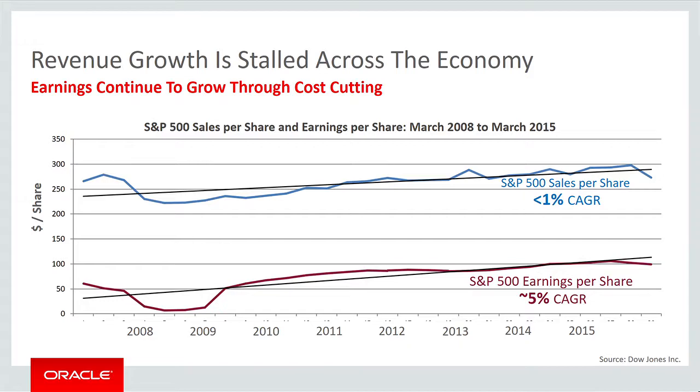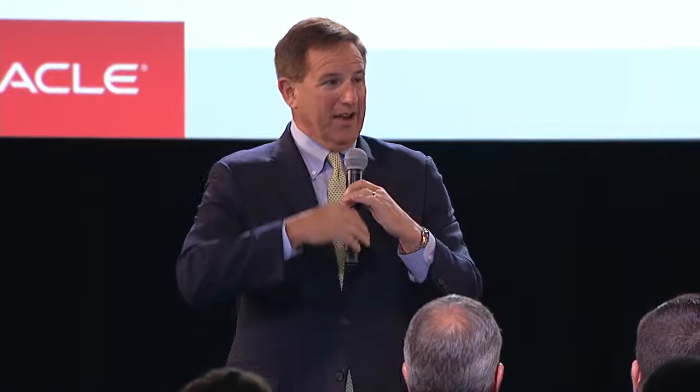During that same time frame, earnings are actually up — more like 5%. Now, without taking you back to grad school: if revenue is a little less than 1% growth and earnings a little more than 5% growth, what does it mean is happening to expenses? They are going down.